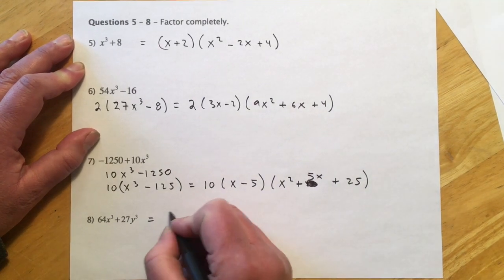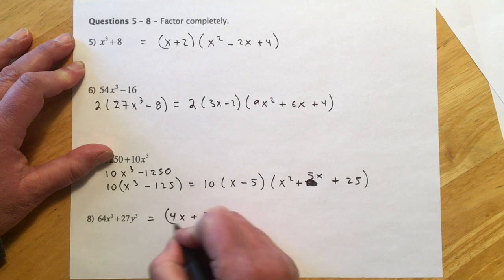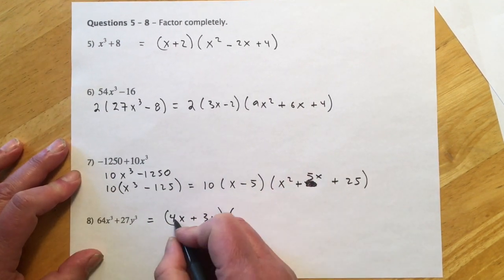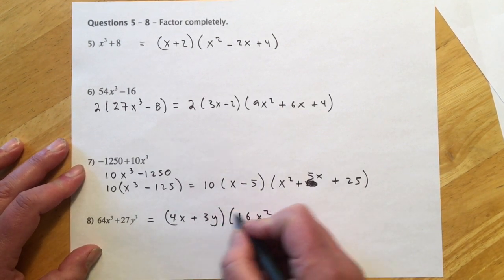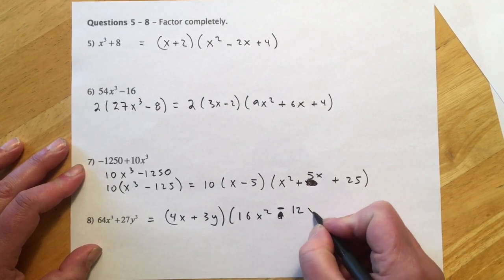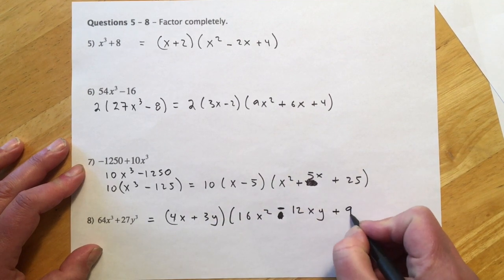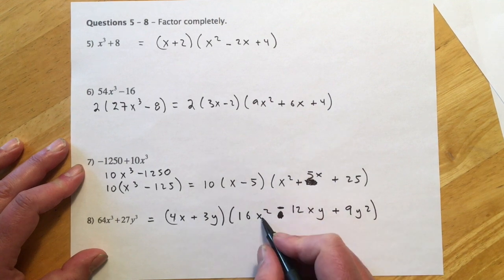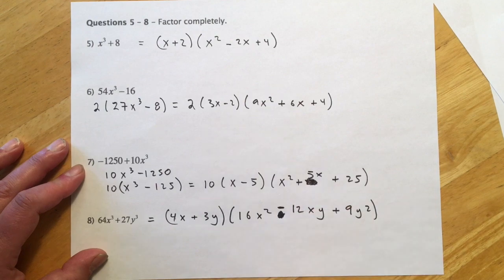And then this last one would go 4x plus 3y, so 64 breaks down to 4, 27 breaks down to 3, and then 4x times 4x, 16x², 4 times 3 is going to give us a 12, minus 12xy, and then 3y times 3y will be 9y². And then again, this piece looks like it factors more, but resist the urge, the formula's right, and so just leave it right here.